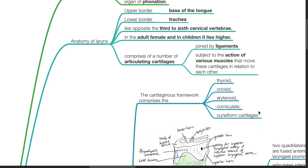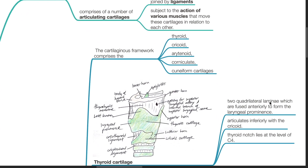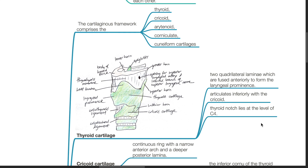The cartilaginous framework comprises of the thyroid, cricoid, arytenoid, corniculate, and cuneiform cartilages. The thyroid cartilage consists of two quadrilateral laminae which are fused anteriorly to form the laryngeal prominence, and it articulates inferiorly with the cricoid.